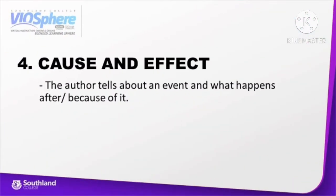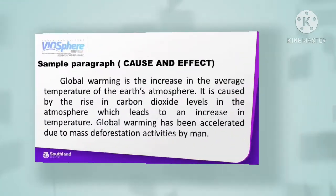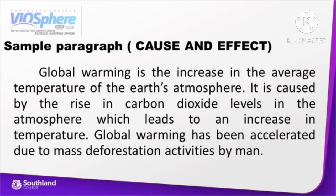Number 4 example of type of text is cause and effect. The author tells about an event and what happens after or because of it. Cause and effect is a common way to organize information in a text. Always remember that the reasons are the causes and the thing that happens is the effect. Sample paragraph for cause and effect: Global warming is the increase in the average temperature of the Earth's atmosphere. It is caused by the rise in carbon dioxide levels in the atmosphere, which leads to an increase in temperature. Global warming has been accelerated due to mass deforestation activities by men.